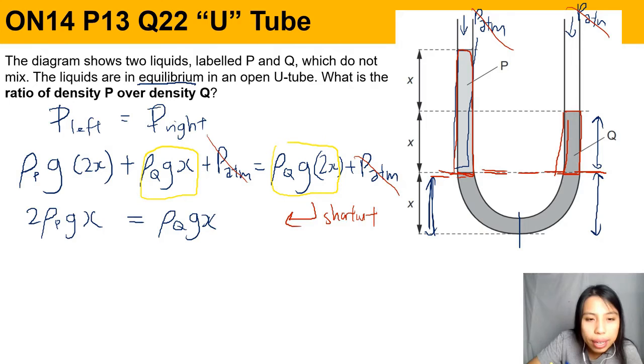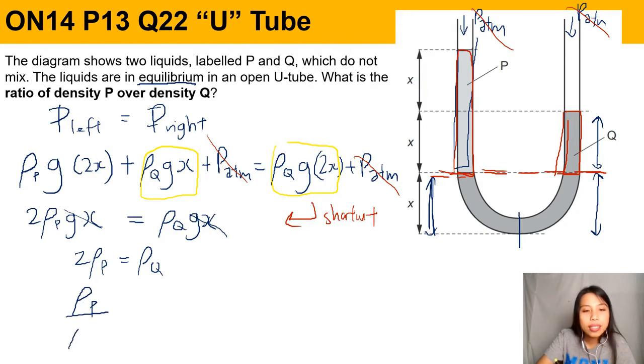How do we simplify? Oh, g and x can cancel out. G, both divide both sides by g and x, so gx is gone. All that's left is 2ρₚ equals to ρQ. And they ask us what's the ratio of density P over density Q. Okay, so we need to do density P over density Q, which means the ratio is one over two. That's how you can find the ratio.